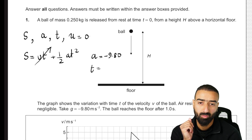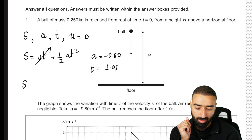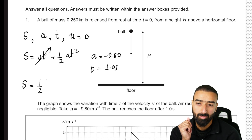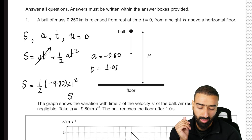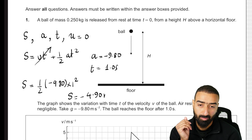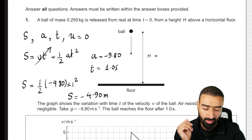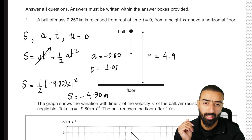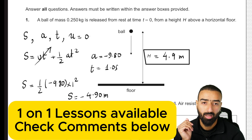Since u is 0, that term goes away. Plugging in the acceleration of minus 9.80 and time of 1 second, we get S equals ½ times negative 9.80 times 1 squared. The displacement turns out to be minus 4.90 meters. The height therefore is 4.9 meters, and that solves the first part of the problem.